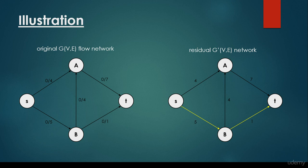We are not able to find any other augmenting path that's going to be shorter, so it's the shortest path possible. We have to get the minimum out of 5 and 1. We consider the edge weights and take the minimum because we are not able to flow 5 units when the capacity of a given edge is 1. So we take the minimum, and we can add flow 1 in the original flow network G.